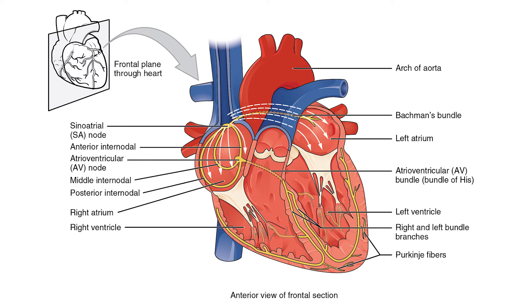The AV or atrioventricular node is the gatekeeper of the heart. It functions as a slight delay to allow all blood from the atria to empty into the ventricles and prevent any backflow. It beats at 40 to 60 beats per minute.